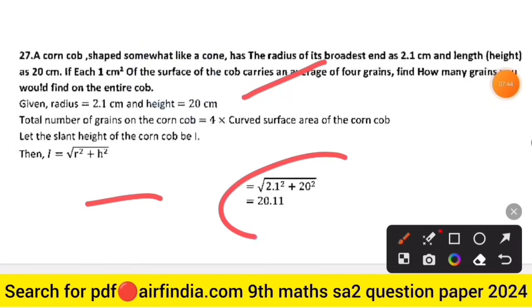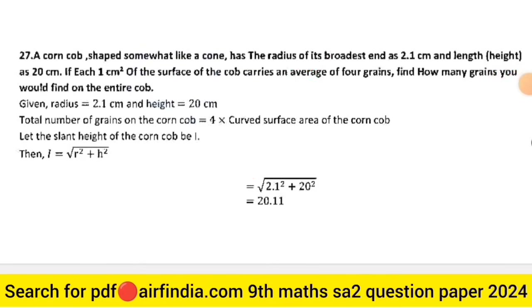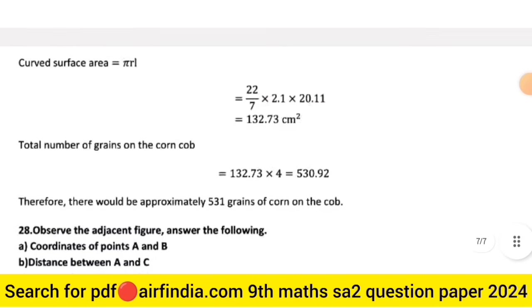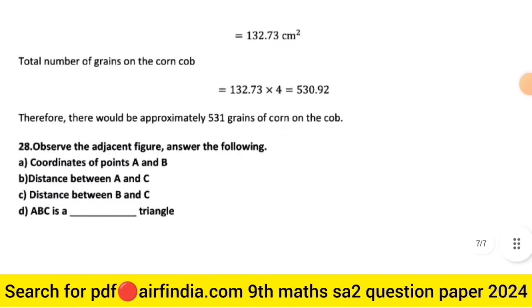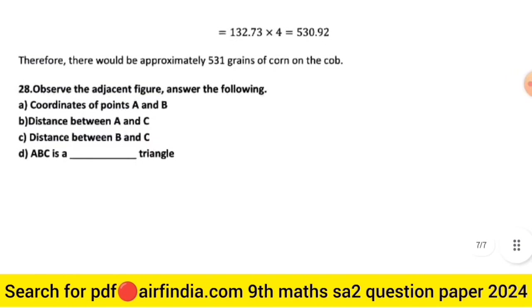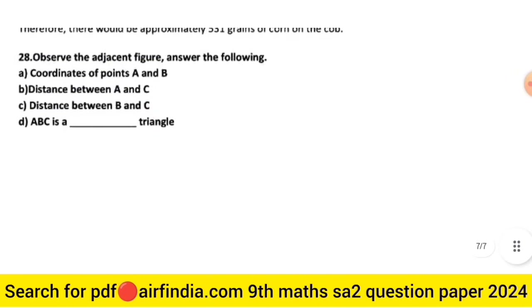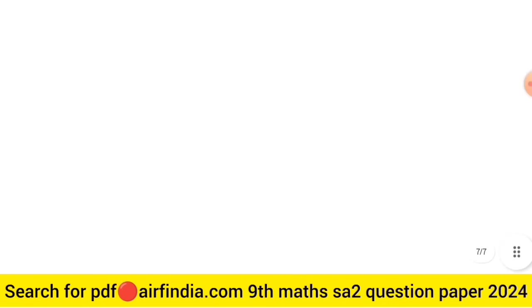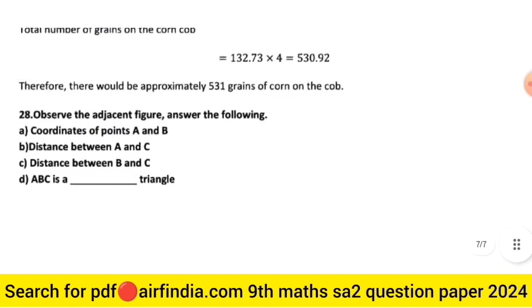Question 27: full solution is provided. Question 28: observe the given figure and answer — coordinate of points A and B, distance between A and C, distance between B and C, and whether triangle ABC is a right triangle. This is the full answer key of Class 9th Mathematics.